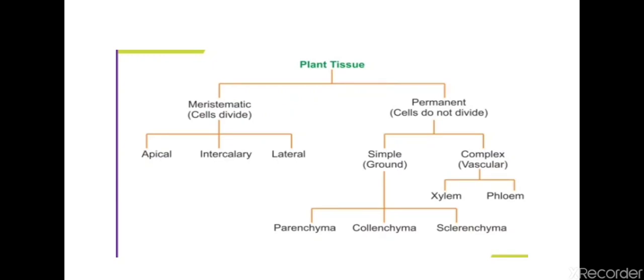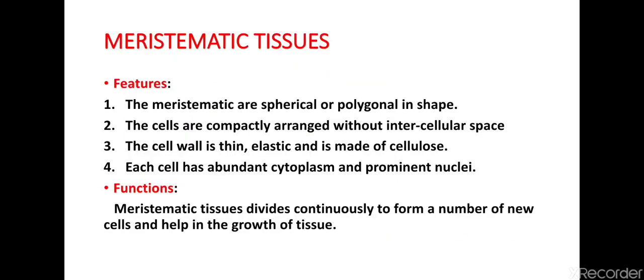Now let us discuss each of them one by one. Firstly, we will be discussing the first type — meristematic tissues. Here are some features: meristematic tissues are spherical and polygonal in shape. The cells are compactly arranged without intercellular space. The cell wall is thin, elastic, and is made of cellulose. Each cell has abundant cytoplasm and prominent nuclei. The function of meristematic tissues is that they divide continuously to form new cells and help in the growth of tissues.